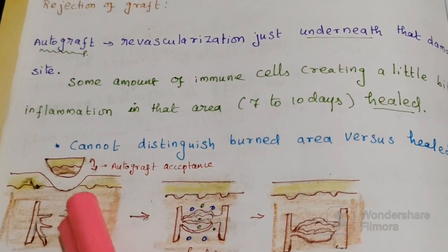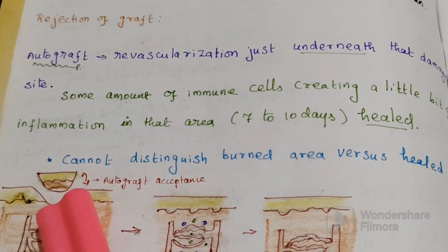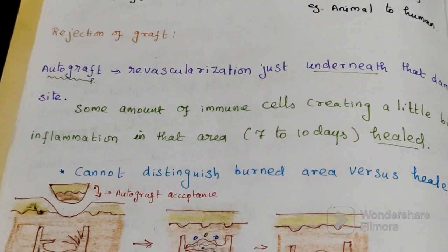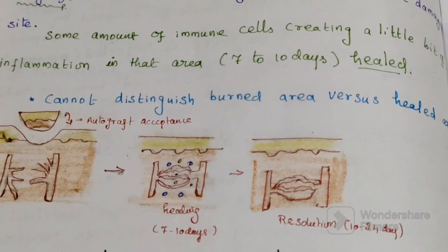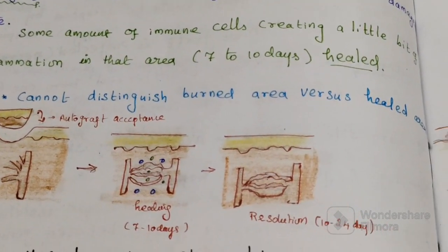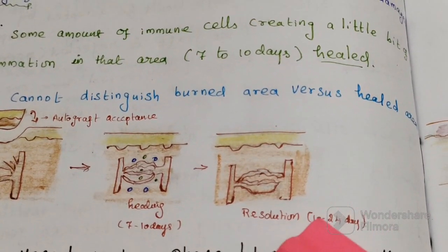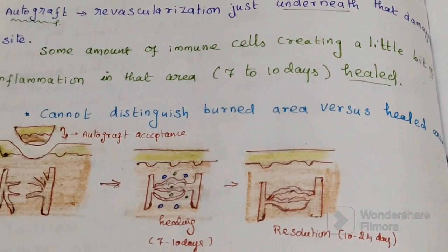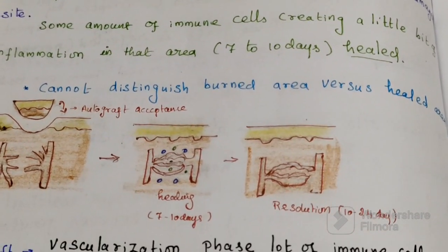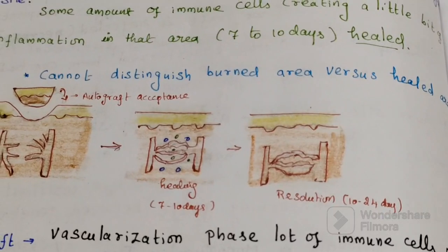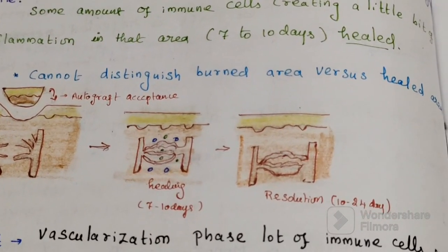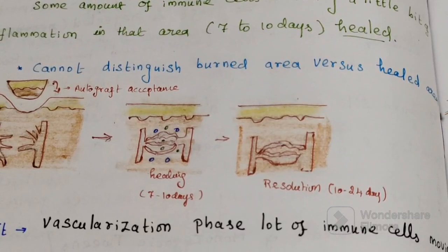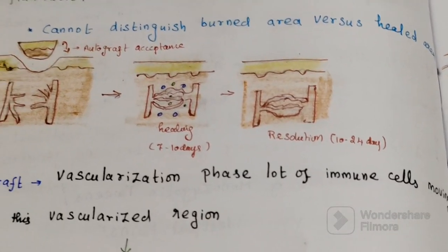Ultimately, the autograft would be resolved in a span of 2 weeks. So with autografting, after some minor inflammation, it will be accepted and healed within 10 to 14 days.